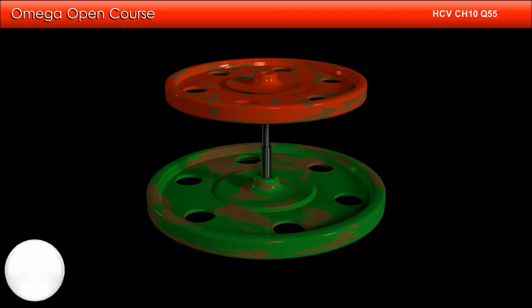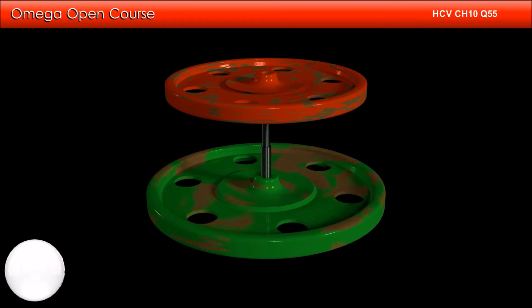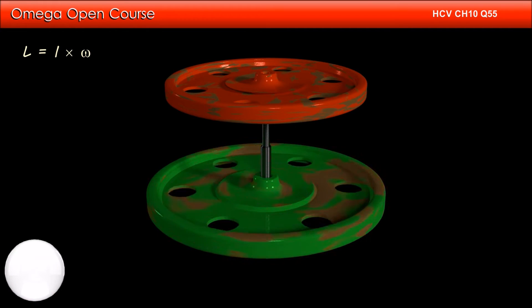Since there is no external torque on the system, the angular momentum of the system must be conserved. As both the wheels are in pure rotation about their axis, their angular momentum is given by moment of inertia into angular speed.